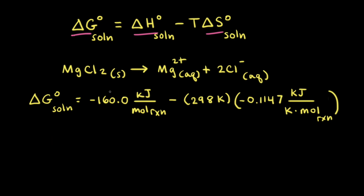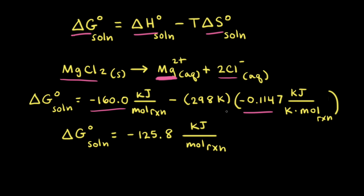Next, let's do the same calculation for the dissolution of solid magnesium chloride in water to form the magnesium 2-plus cation and 2 chloride anions. The increased positive charge of the Mg2-plus cation gave us a negative value for delta H-naught and a negative value for delta S-naught. Plugging in all the numbers at 298 Kelvin gives us delta G-naught of solution equal to negative 125.8 kilojoules per mole of reaction. Since delta G-naught of solution is negative, the dissolution of magnesium chloride is thermodynamically favorable, and at 25 degrees Celsius, magnesium chloride is soluble in water. This time, it's the favorable negative value for the enthalpy term that outweighs the unfavorable negative value for the entropy term, so the decrease in enthalpy drives the dissolution.